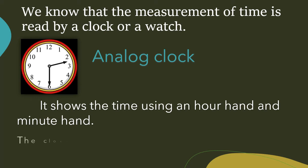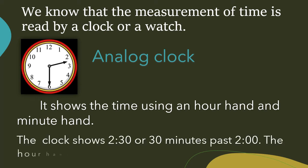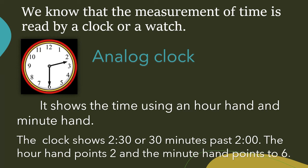In the given example, the clock shows 2:30 or 30 minutes past 2. The hour hand points to 2 and the minute hand points to 6.